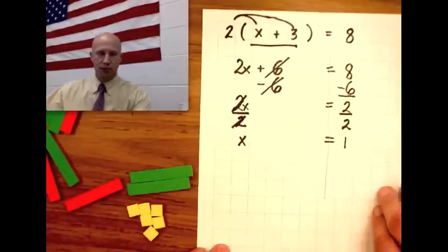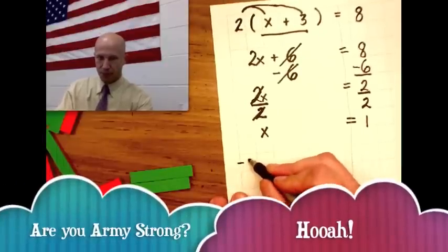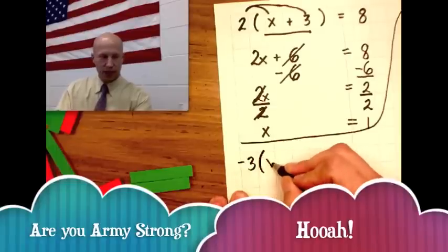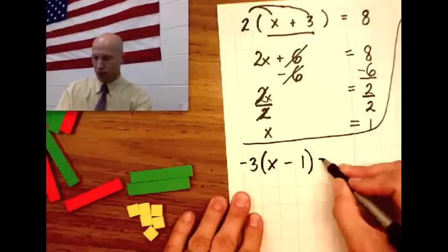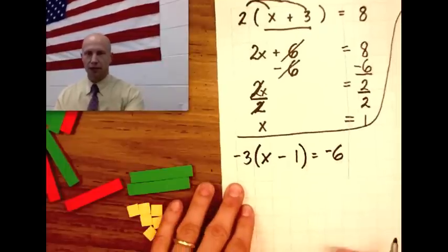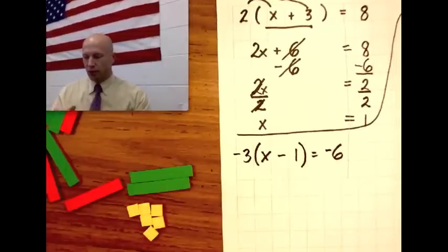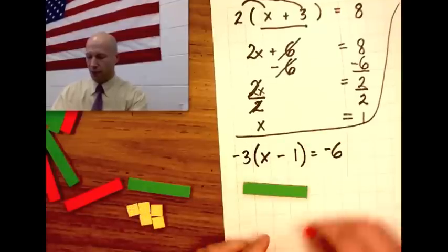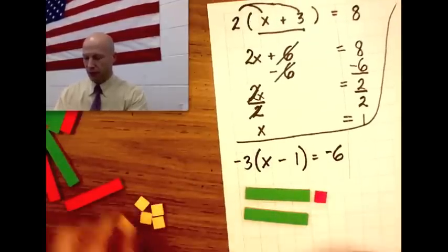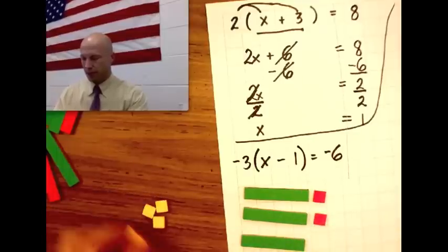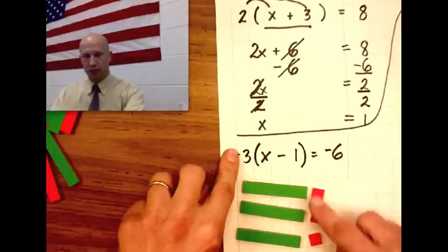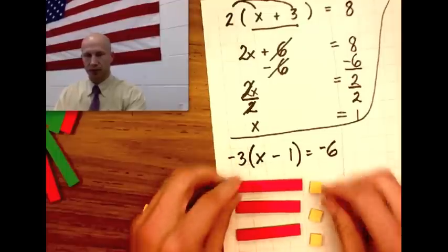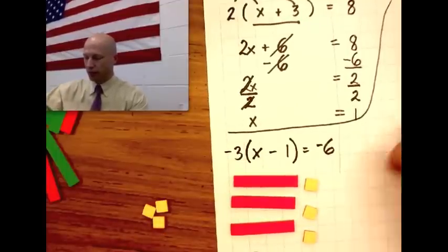Let's do a tougher equation: negative 3 times x minus 1 equals negative 6. So we learned in an earlier video this is really just three groups of x minus 1, but we're going to make them negative groups. So let's start with x minus 1, x minus 1, x minus 1. This is three groups of x minus 1, but we want negative three groups, so we flip all our groups. It's the opposite of three groups of x minus 1, and over here we have negative 6.